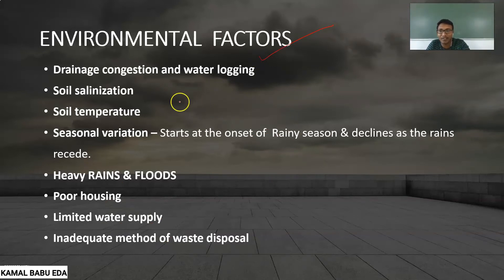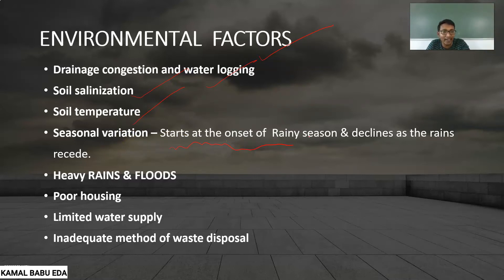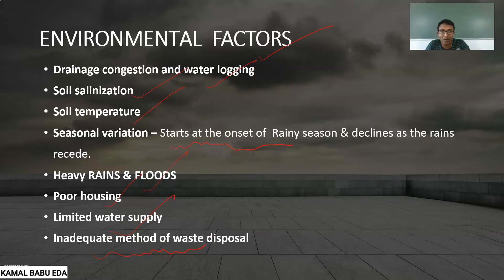Favorable conditions for transmission include drainage congestion, waterlogging, soil sanitation, soil temperature, and seasonal variation. Transmission starts at the onset of the rainy season and declines as rains recede, because during rainy season there is more stagnant water. Heavy rains and floods, poor housing, limited water supply, and inadequate waste disposal are all favorable conditions for transmission of leptospirosis.